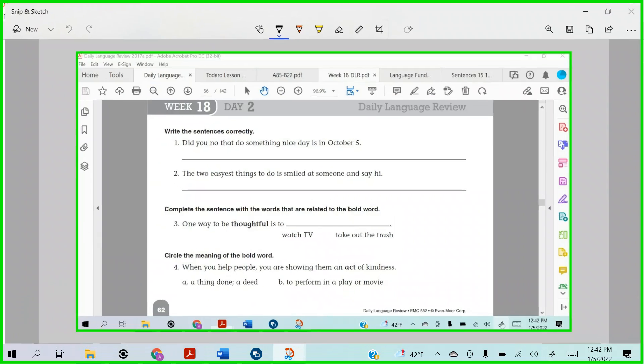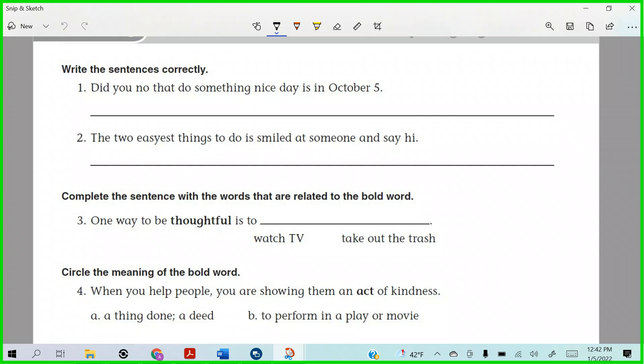The first one says, Nadia, what does this say? Go ahead, read that. It's hard to read though sometimes, isn't it? It's like so goofed up, right? So it says, did you know that do something nice day is in October 5th? How are we going to fix this? You have to change the N-O to K-N-O-W.